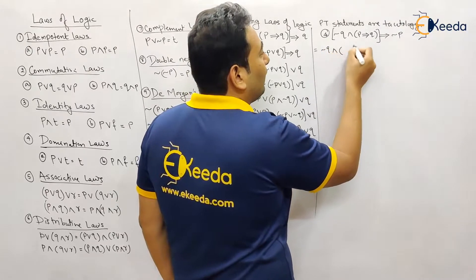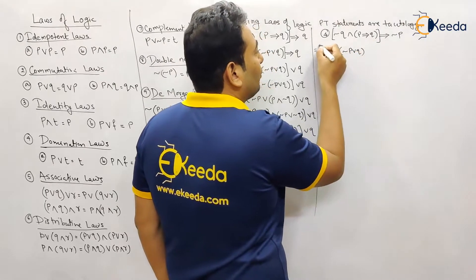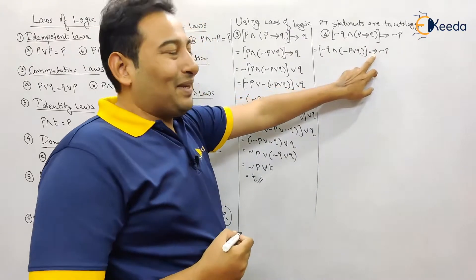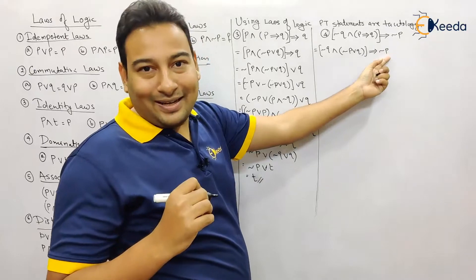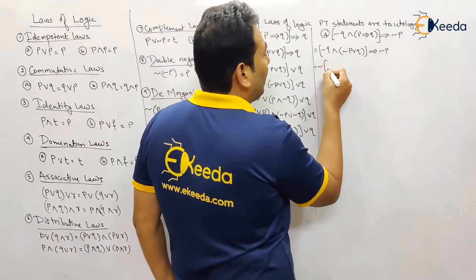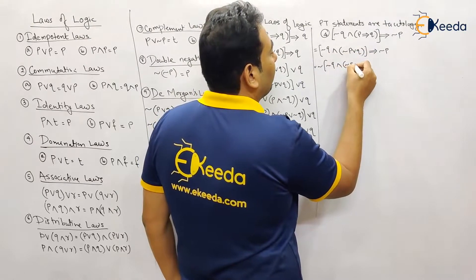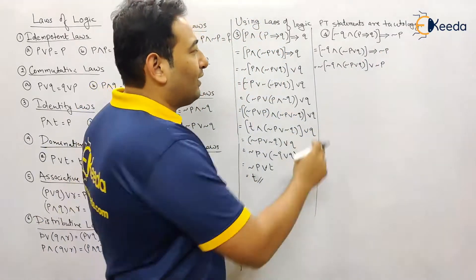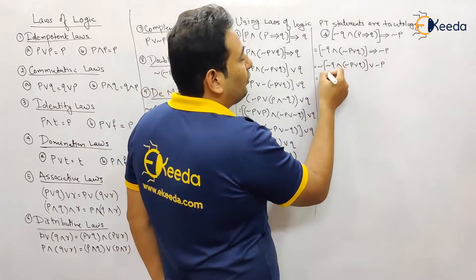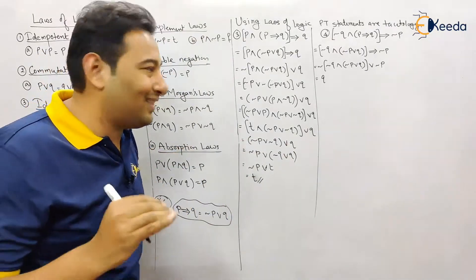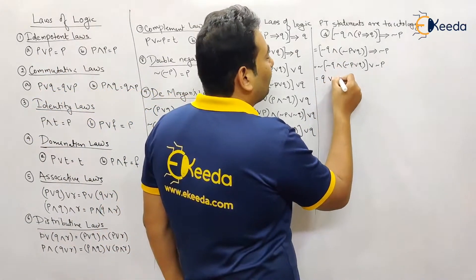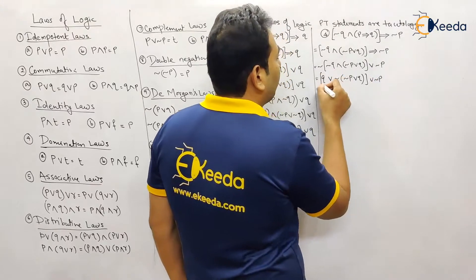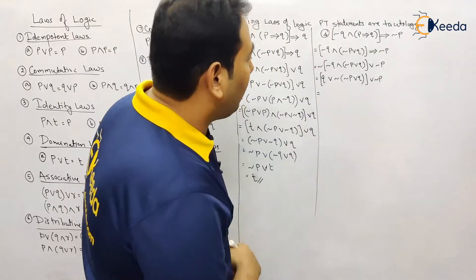For problem four, solving the first implication gives: (negation q or ...) in bracket implies negation p. For the outer implication, the first term is the entire bracket and the second term is negation p, so we get: negation of (negation q or ...) or negation p. Taking the negation inside: negation of negation q gives q by double negation; and becomes or; giving q or (negation of negation p) or q, or negation p.